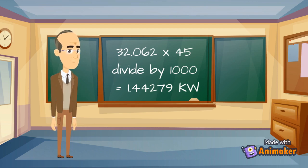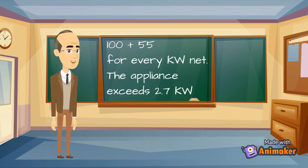If we divide by 1000, it tells us the maximum kilowatts for that room. Which is 1.44279 kilowatts, or rounded to 1.44 kilowatts. Our 1.44 kilowatts is the maximum size appliance for that room.